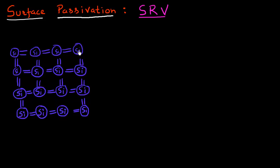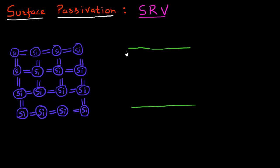We know that in our semiconductor — in this case silicon — we have these periodic atoms and a periodic lattice structure. And that results in the formation of these very beautifully placed conduction and valence bands, and this band gap which separates and distinguishes between these conduction and valence band states.